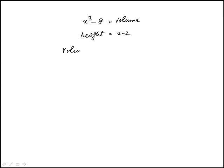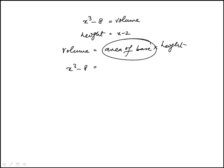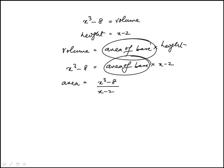We're told that the volume is the area of the base times the height. So the volume is x cubed minus 8, and we need the area of base times the height, which is x minus 2. So we're looking for area, which is x cubed minus 8 over x minus 2.